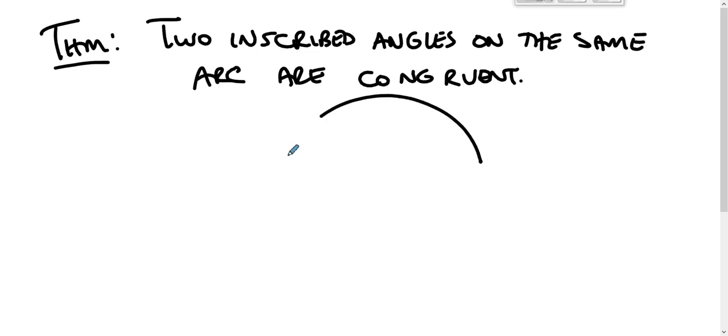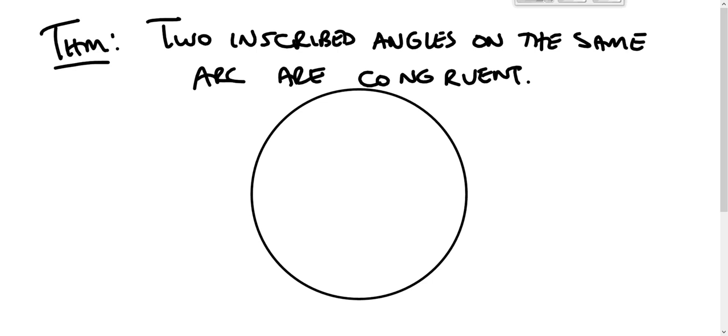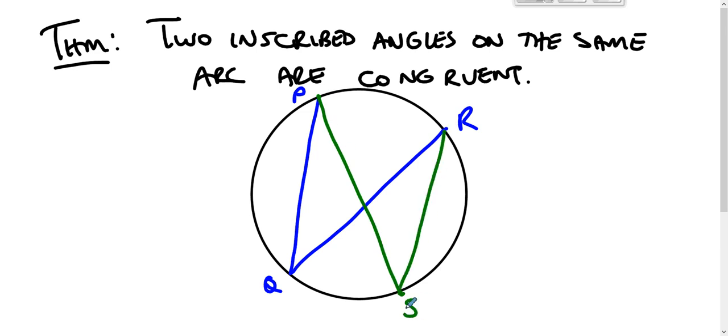Why—oh let's use the tool—why if the blue angle is on this, so PQR is on PR and then PSR is on PR, why do those two angles have to be congruent? Well, because they both have the same corresponding central angle. PQR is half of POR, PSR is half of POR, and so they must be congruent.